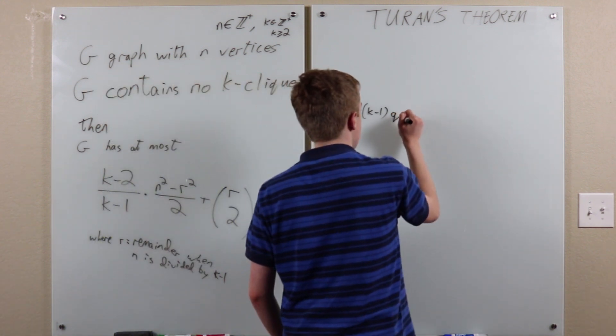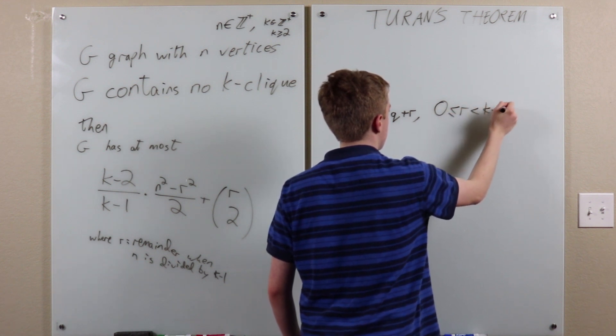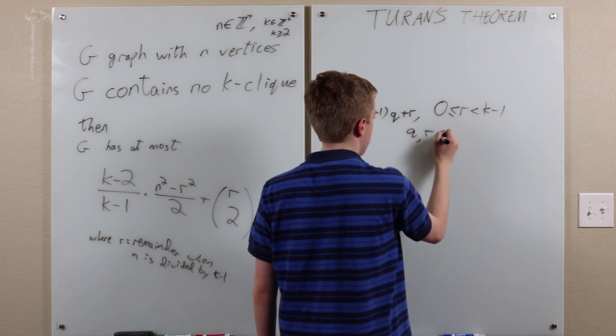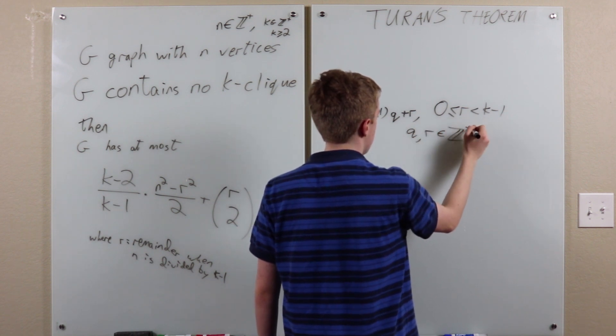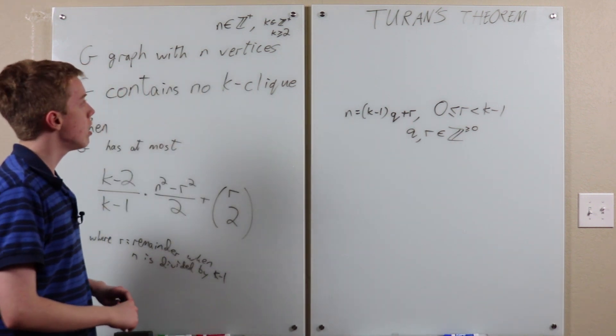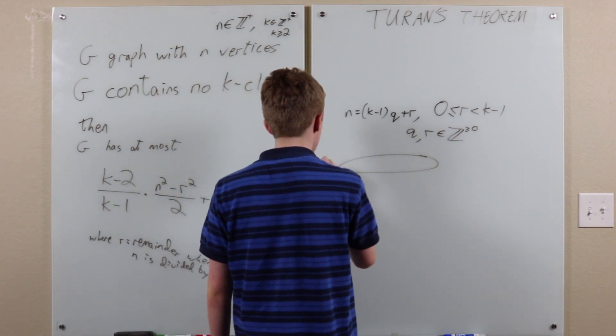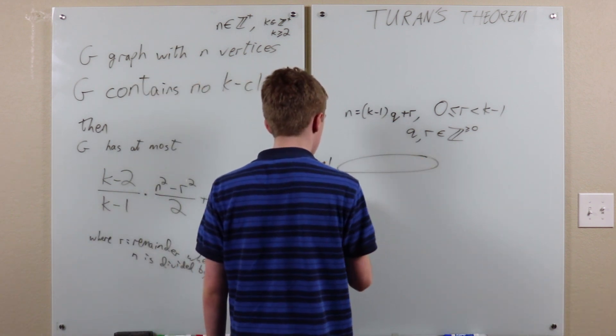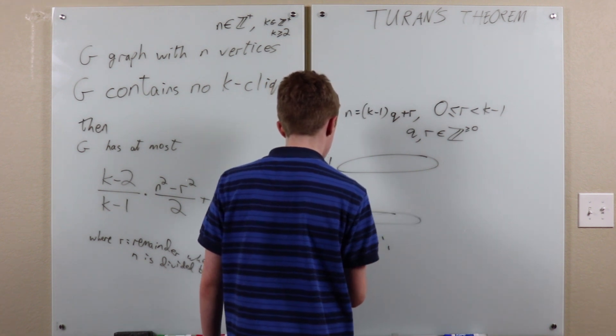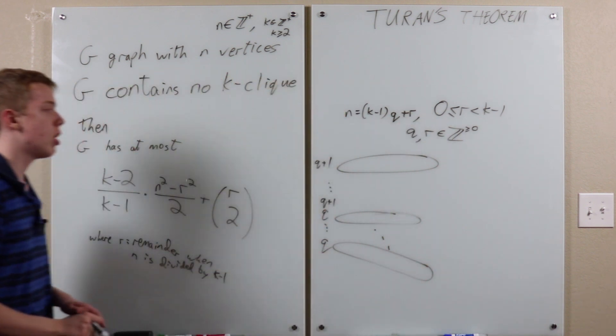So let's write n like this. Q and r are integers, non-negative integers. And then we break the n vertices up into k minus 1 groups, the first r of which contain q plus 1 vertices each, and then the rest of which contain q each. So, pretty much as equal sized as possible.